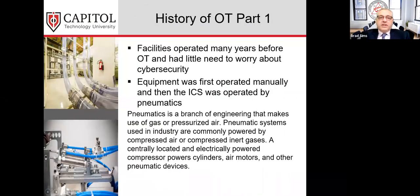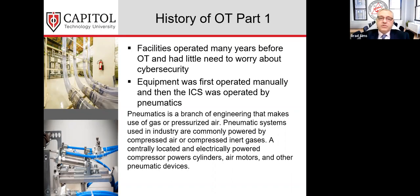A bit of the history of OT and industrial facilities: facilities operated for many years before operational technology had any need to worry about cybersecurity. Equipment was first operated strictly manually, and then industrial control systems were operated by pneumatics — using gas or pressurized air to turn something on or off. It wasn't connected to the internet, so there was no real worry about anyone getting in from 5,000 miles away. It's only now that we're connected to the internet that OT has become a dangerous aspect in our critical infrastructure that we must protect.